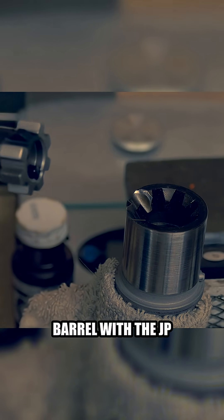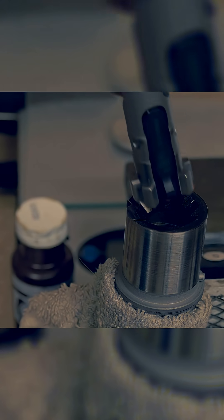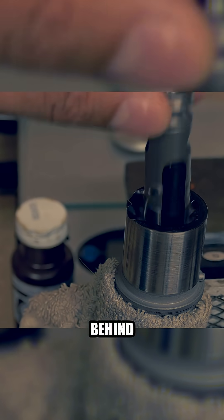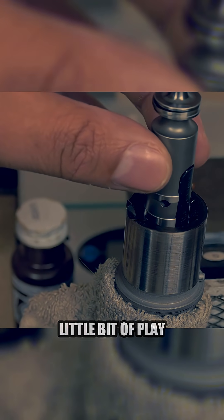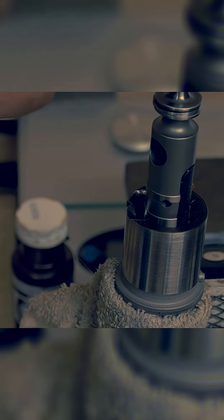So now I'm going to check the headspace on this barrel with the JP bolt. I put it in and rotate it so it locks behind those lugs, and as I wiggle it a little bit you can see there's a little bit of play. That should be taken out as soon as a round is chambered.